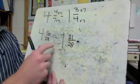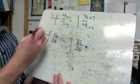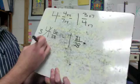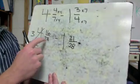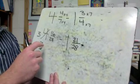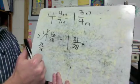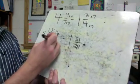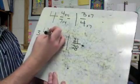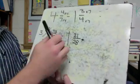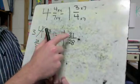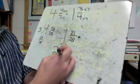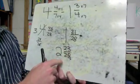We can't do sixteen minus twenty-one, so we need to do some borrowing. Four becomes a three. Our whole here is twenty-eight, so we need to put twenty-eight with the sixteen. Twenty-eight plus sixteen: sixteen, twenty-six, thirty-six, thirty-six plus eight is forty-four. So that gives us forty-four twenty-eighths. Three minus one is two, and forty-four minus twenty-one is twenty-three. So our answer is two and twenty-three twenty-eighths.